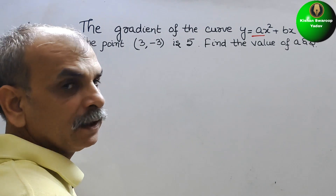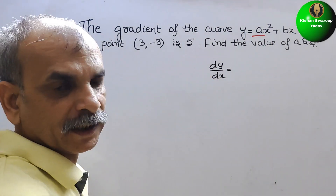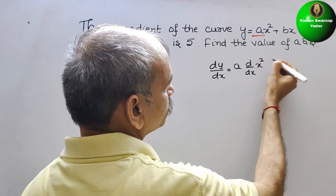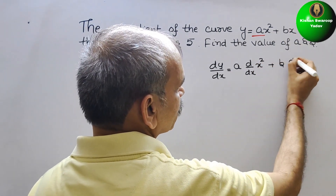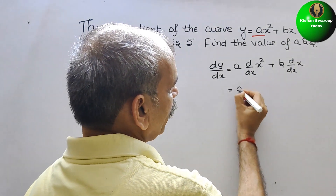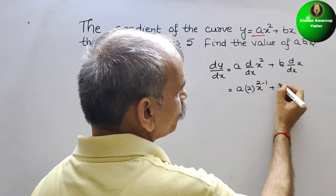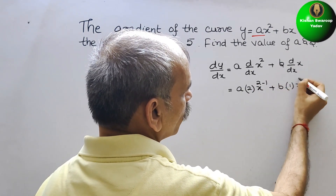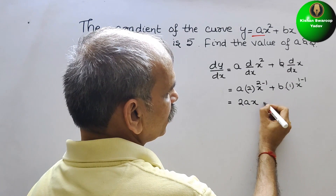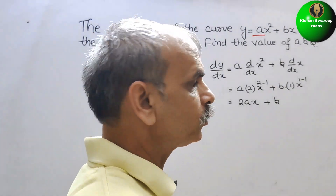If we differentiate, on the left side we get dy/dx. Since a is constant, we write a times d/dx of x², and b is constant, so we write b times d/dx of x. Applying the power rule, we get a times 2x to the power of 2 minus 1, plus b times x to the power of 1 minus 1. Therefore, dy/dx = 2ax + b, since x to the power of 0 is 1.